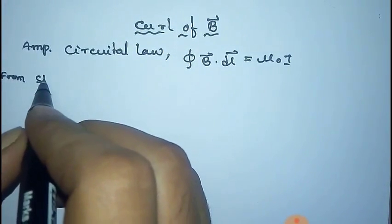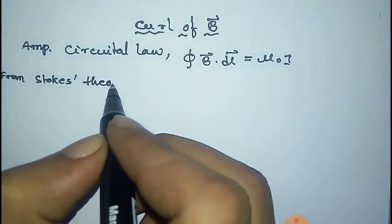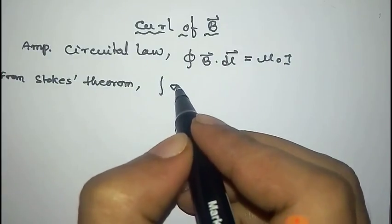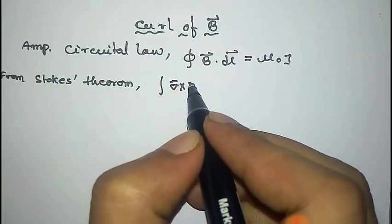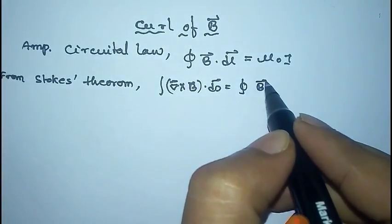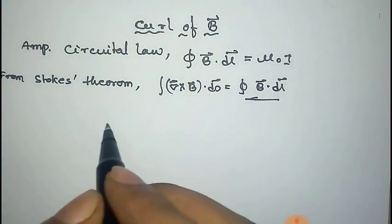Now from Stokes' theorem, we can write that ∮(∇×B)·ds equals the line integral ∮B·dl. So we can replace this term with this.